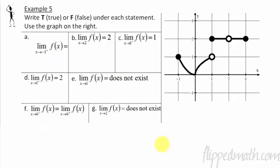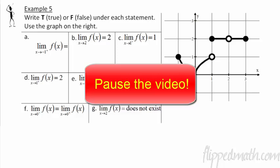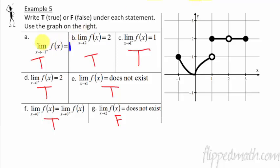Alright, we are done. You're going to pause the video, try this one on your own, and I will have the answers appear. Here are the answers — sorry about the first one, I forgot to write equals 1, but your notes should have it correctly. All of them are true except for the last one, which is false. Why is the last one false? It does exist: if we approach x = 2 from both the left and the right side, both sides approach the same y value of 2. So the limit is 2 — it's not that it does not exist.